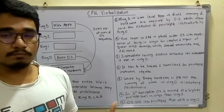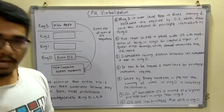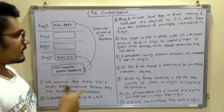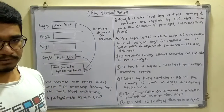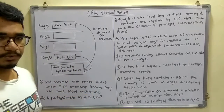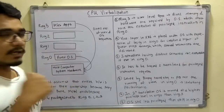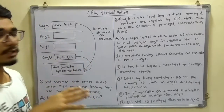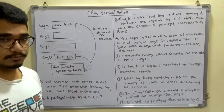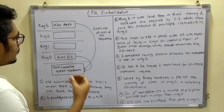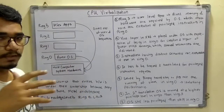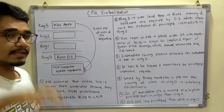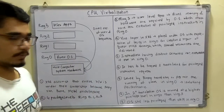First, we have a basic diagram for CPU virtualization showing four privilege rings or protection rings — privilege levels Ring 0 to Ring 3. At Ring 3 you have the user application, which does direct execution of user and OS requests. Rings 2 and 1 are kept null for future purpose, and Ring 0 is for the guest OS.